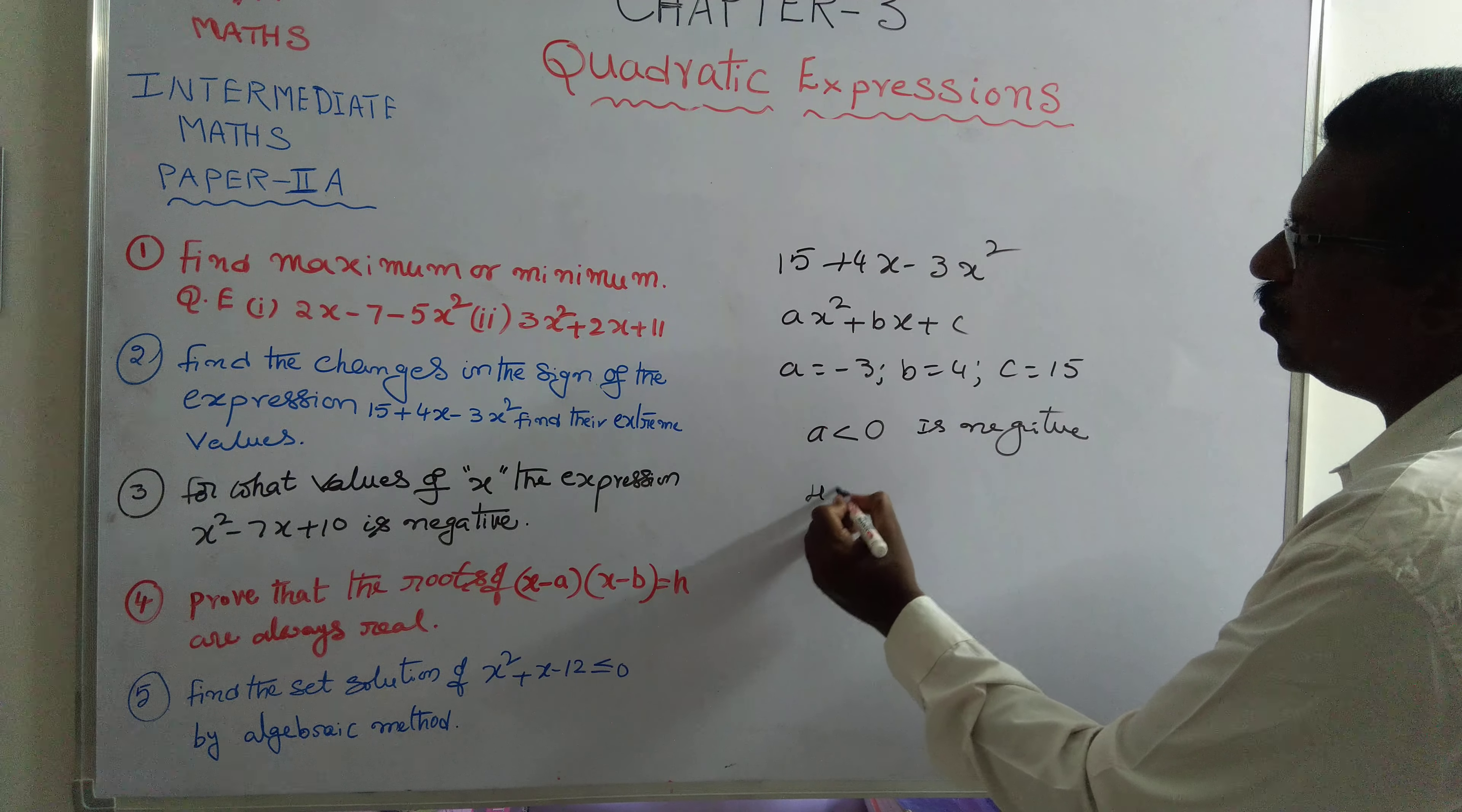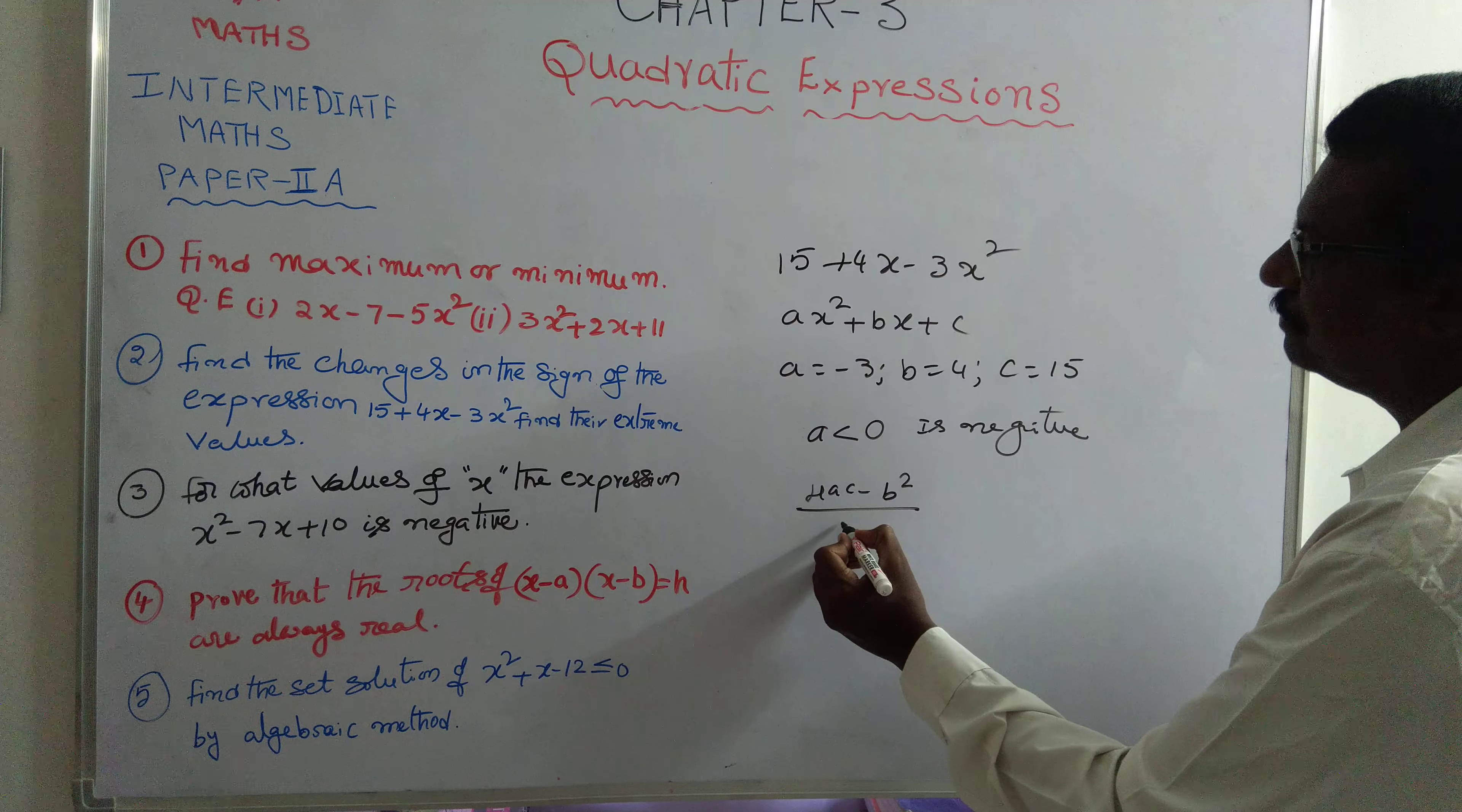Formula, what is this? Formula: 4ac minus b squared by 4a.